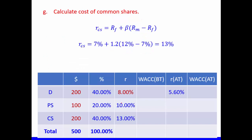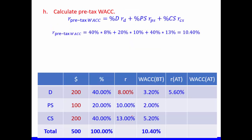We calculate the cost of common shares using the Capital Asset Pricing Model (CAPM), because the variables given are risk-free rate, beta, and market return. The formula is: cost of common share = risk-free rate + beta × (market return − risk-free rate) = 7% + 1.2 × (12% − 7%) = 13%.